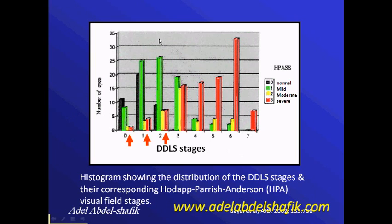However, clinically I notice that some cases show severe visual field changes even with early disc classification stages. Therefore, I depend on both the disc and the visual field to classify my patients as mild, moderate, or severe glaucoma. I would consider both factors as key elements for determining treatment.